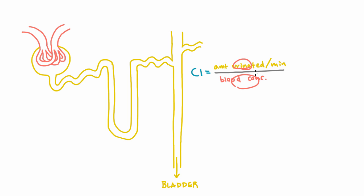Well you would need to know both the denominator and the numerator. And so how would you get the blood concentration? Well you would just take a blood sample and measure the concentration. And how would you measure the amount urinated per minute of some substance? Well the key is to realize that that is equal to the concentration of that substance in the urine times the volume of urine that you produce per minute.